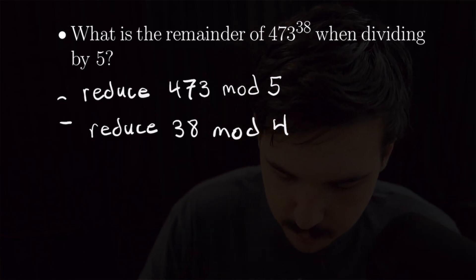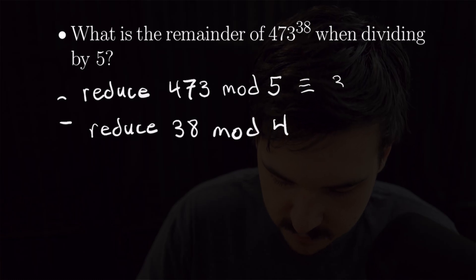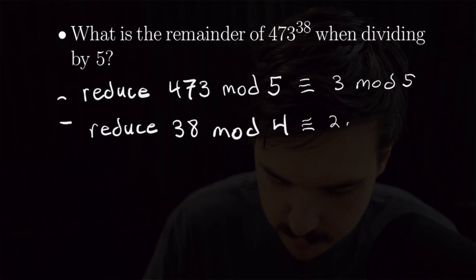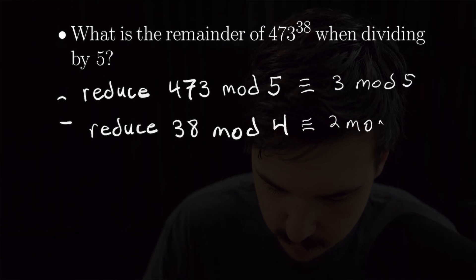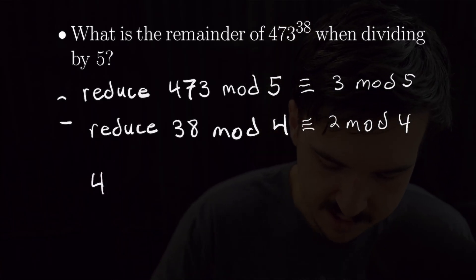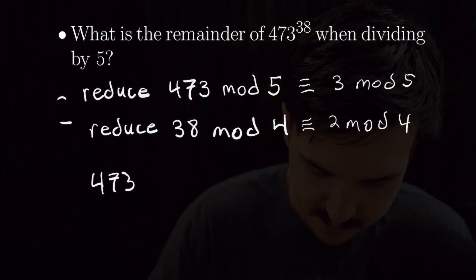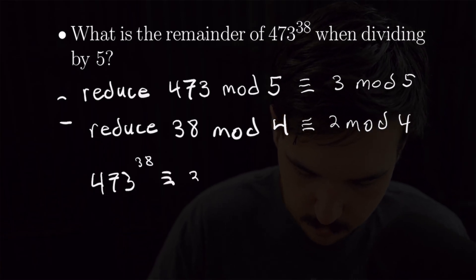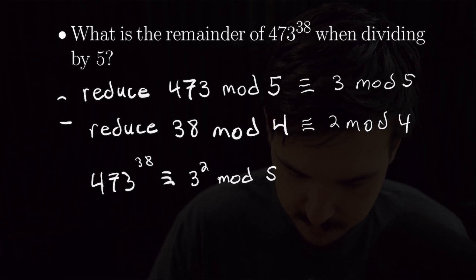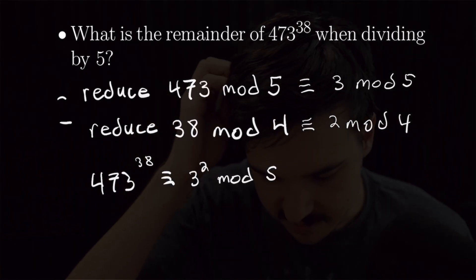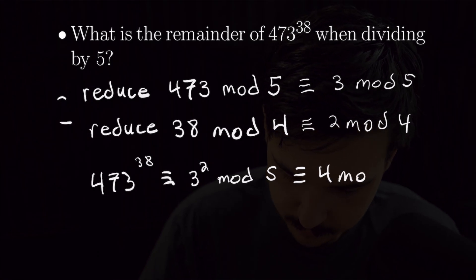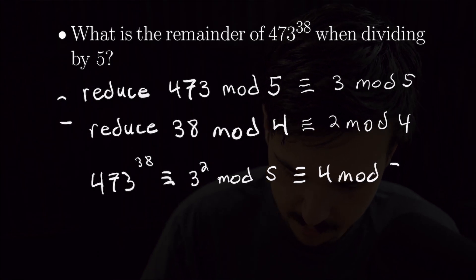So 473 mod 5 is going to be negative 2, which is going to be 3 — so this is congruent to 3 mod 5 — and 38 reduced mod 4 is going to be 2. That gives us 473 to the 38th power is congruent to 3 squared mod 5. And 3 squared is 9, which is congruent to 4 mod 5, giving us our final answer: 4 mod 5.